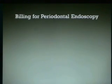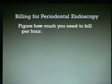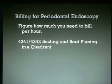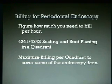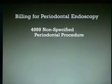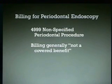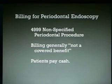What about billing for periodontal endoscopy? You need to figure out how much you need to bill per hour to make this profitable. 4341 and 4342 are the codes for scaling and root planing per quadrant, and these are what we use to bill. We normally maximize the billing per quadrant to cover some of the endoscopy fees — billing the most amount we feel is reasonable. For the scope, we bill $49.99, which is a non-specified periodontal procedure. This billing is generally not a covered benefit, so patients pay cash for that.